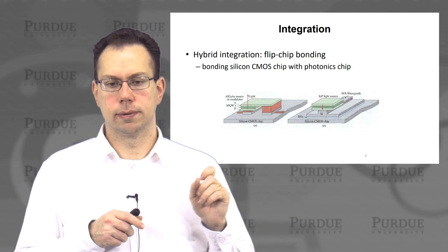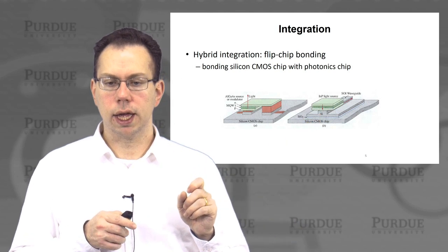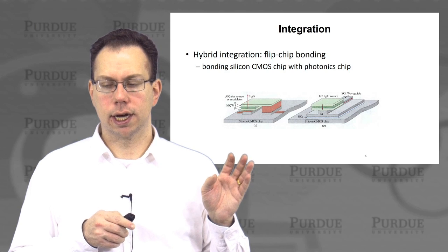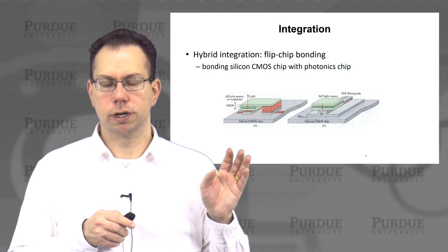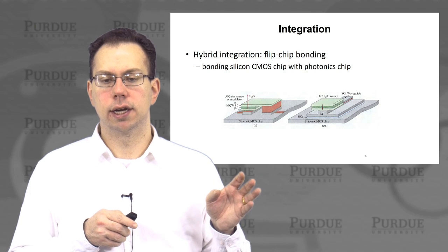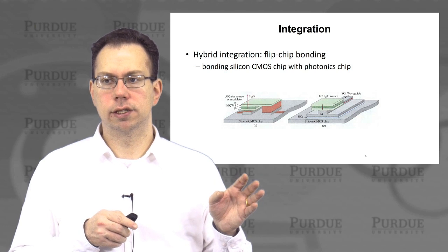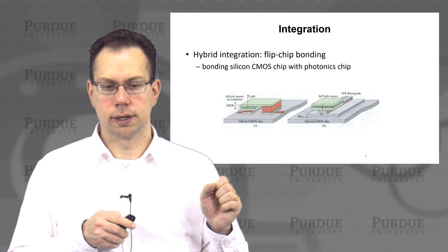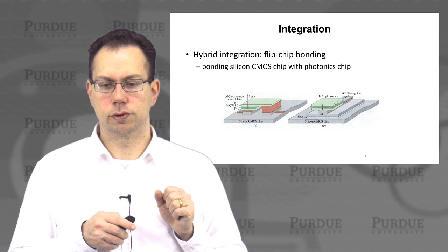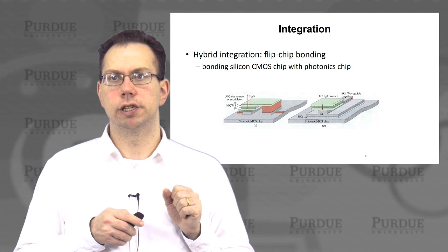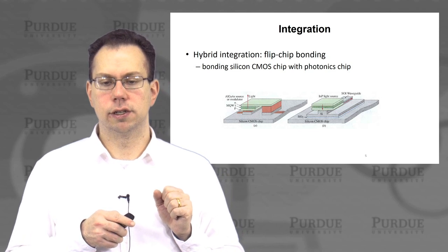This can essentially use predominantly silicon parts for the passive components and then these 3-5 materials for the active components, such as the lasers, and sometimes the detectors as well — although the detectors can also be made from germanium, which is usually considered CMOS compatible.